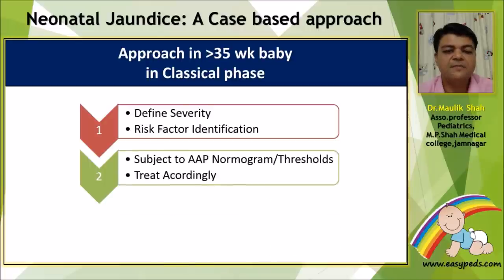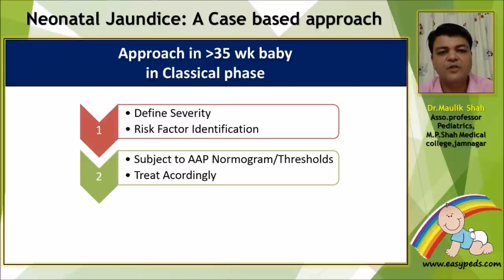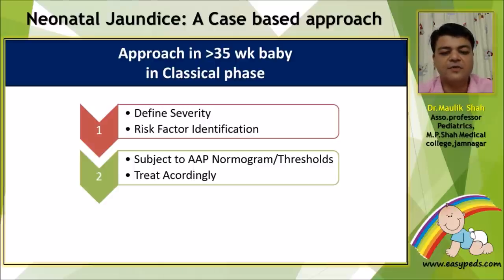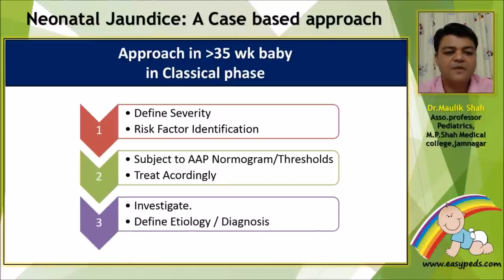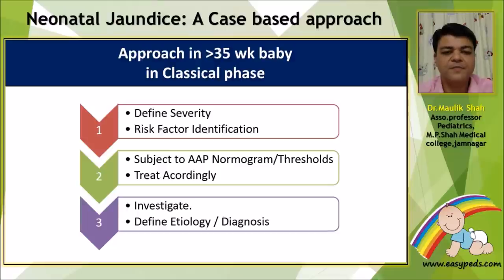The second step is to subject the total serum bilirubin level to AAP normograms or threshold, or whatever the region-specific or unit-specific policy is, and treat the baby accordingly — whether to go for phototherapy or exchange transfusion. After that, we need to investigate thoroughly while ongoing treatment is underway to define the etiology, diagnosis, and prognosis of the baby.